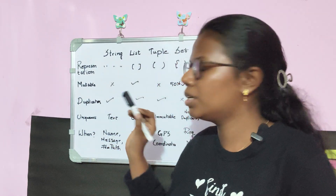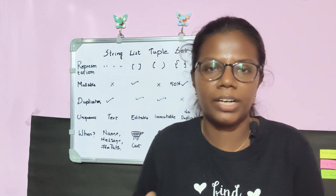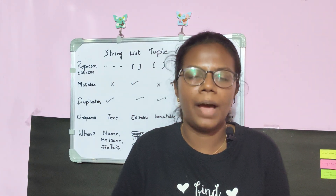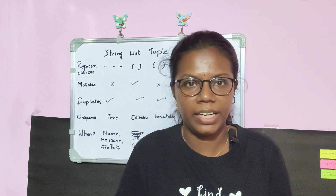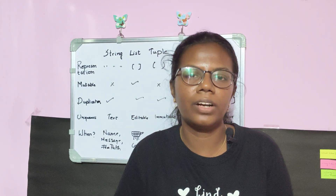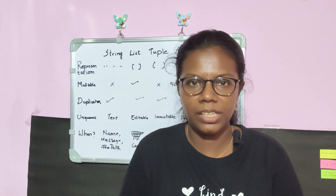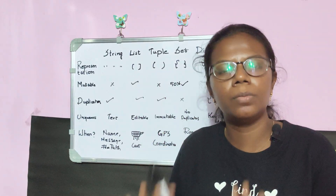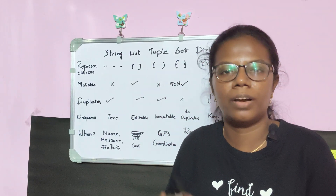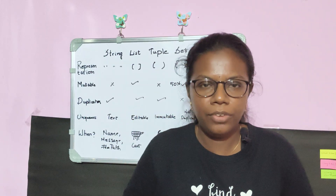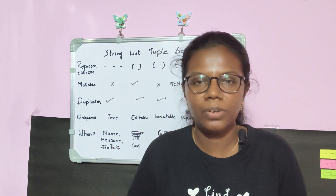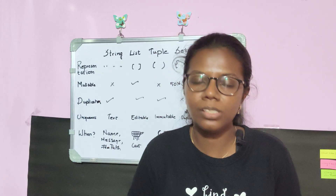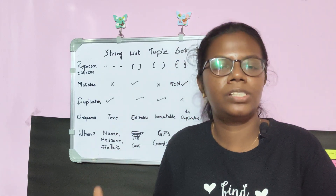Next, duplicates — we are going to check out if a particular data type has duplicates or doesn't have duplicates. Duplicates means if a particular value is repeated more than once in Python. Next, uniqueness — what is unique about each data type so that you can remember how they work in Python forever. And finally, we are going to see some real-life use cases of all these data types.